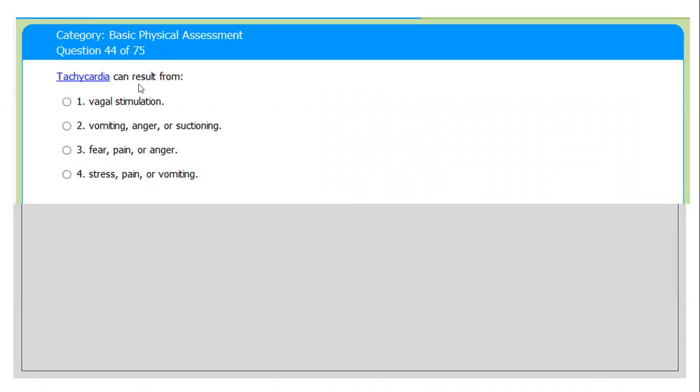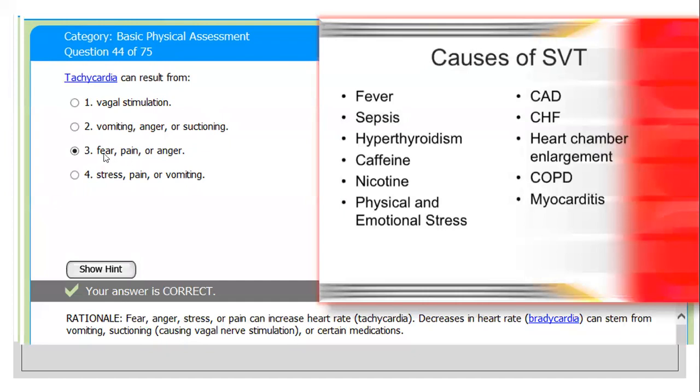Next question: tachycardia. What are the causes of tachycardia? Number one: vagal stimulation. Number two: vomiting, anger, or suctioning - means emotionally disturbed. Anxiety can cause tachycardia. Number three: fear, pain, and anger. Number four: stress, pain, or vomiting. The correct answer is fear, pain, and anger.